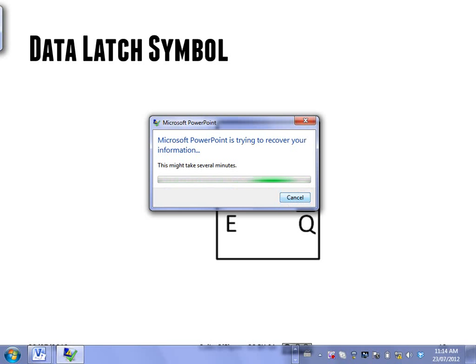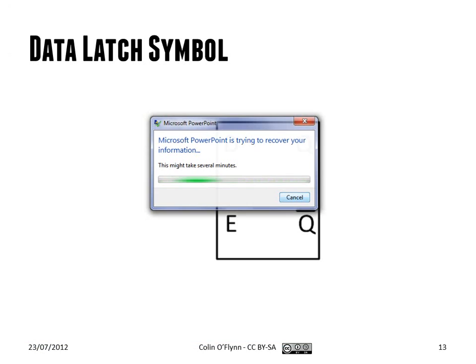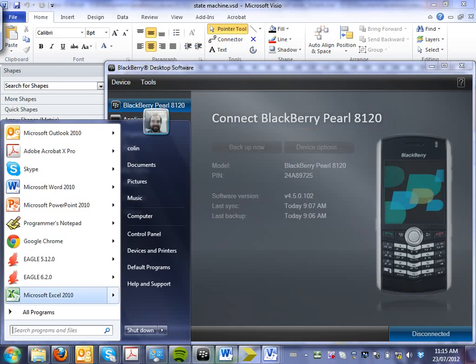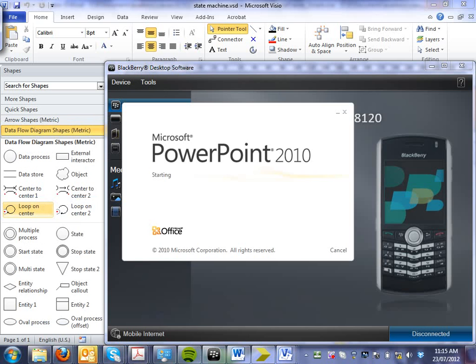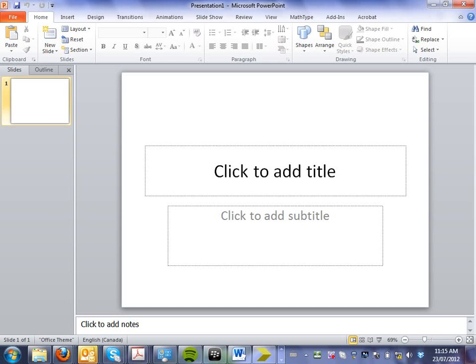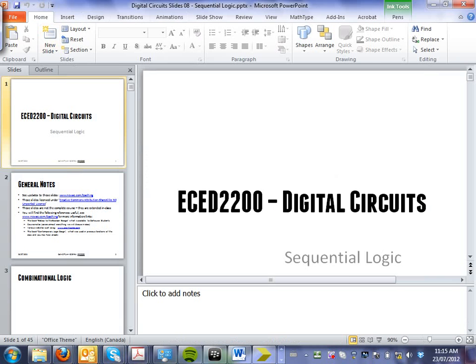As I had said before, the RS latch has this problem that if the R and S are both one, one, what we'll run into is that it's some invalid state. So the output is not one, or the outputs are not complement of each other like we'd expect. You'd get Q as one and Q' as one, something like that. So that's obviously what we want to avoid or something we want to avoid.